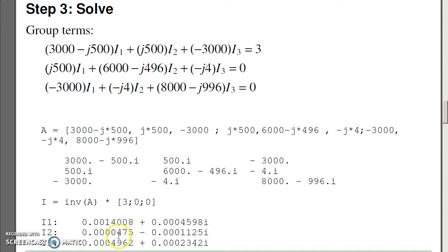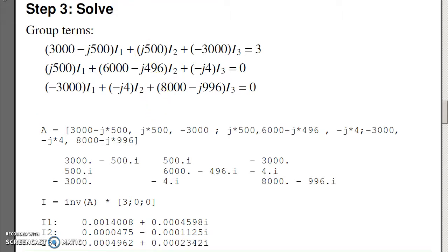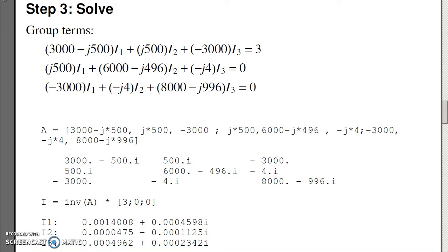What these numbers mean is the real part is cosine, minus j is sine. The frequency is the frequency of the input. The input was 1000 radians per second. Everything in the circuit is 1000 radians per second.